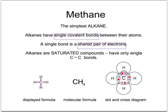Alkanes are said to be saturated, and that means that they've only got these single carbon-carbon bonds. There are a few ways that you can write methane, and two in particular you need to know about. One is the molecular formula, which just tells you the number of atoms of each type of element in the compound. Then there's the displayed formula, which shows you each atom and each bond separately.